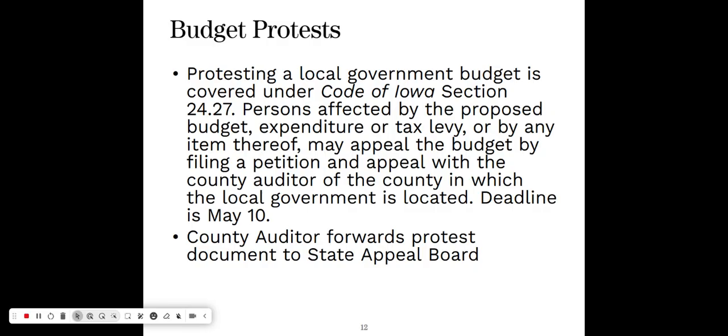If a budget protest is forwarded to the State Appeal Board by your county auditor, staff would conduct a local hearing in your county where you would speak to your budget and the folks that protested would also speak. Staff would gather all that information, take it back to the State Appeal Board, and the State Appeal Board would render a decision on your budget — which can include reducing your tax asking and/or expenditures.